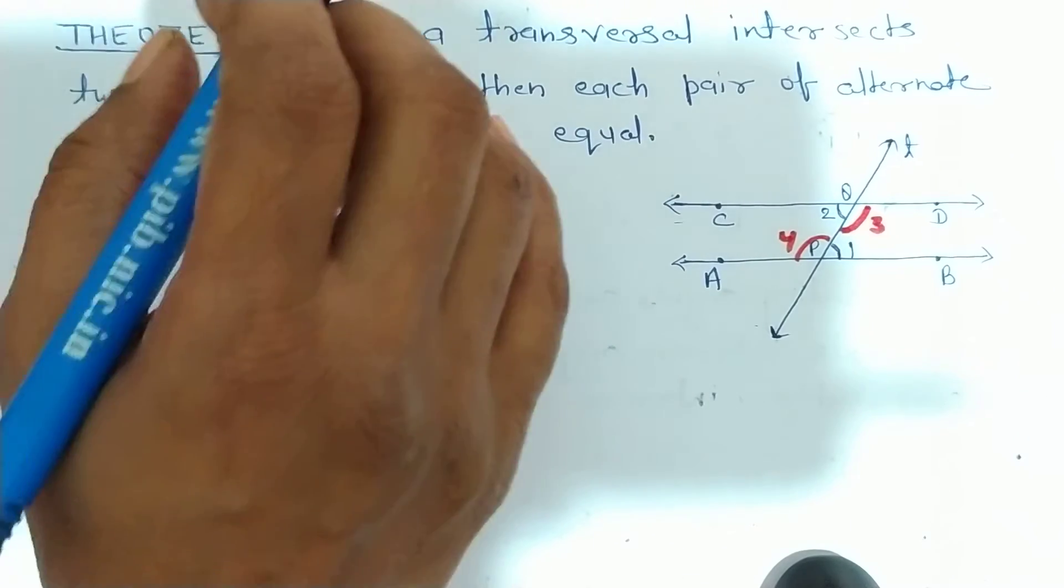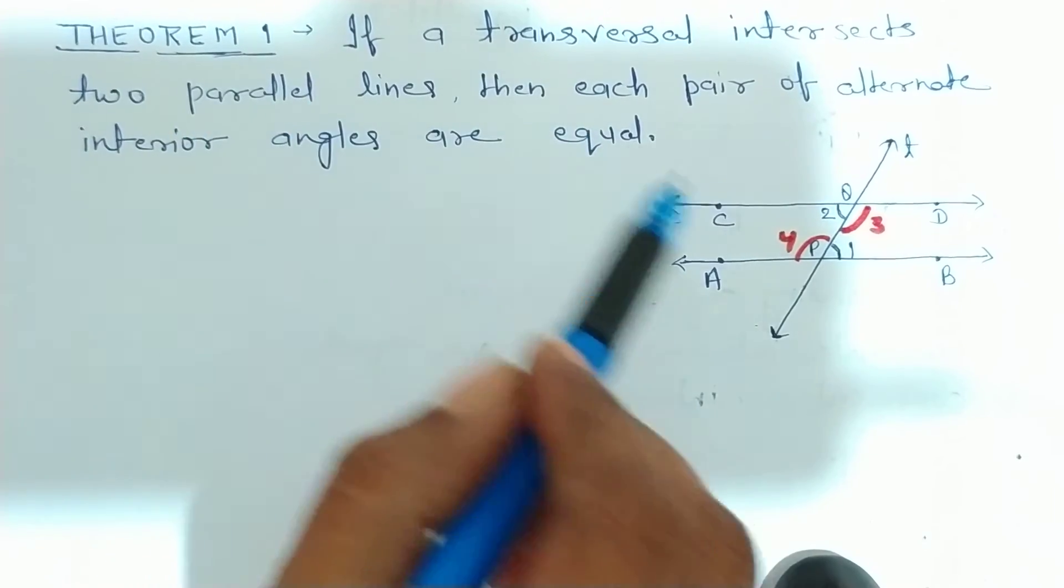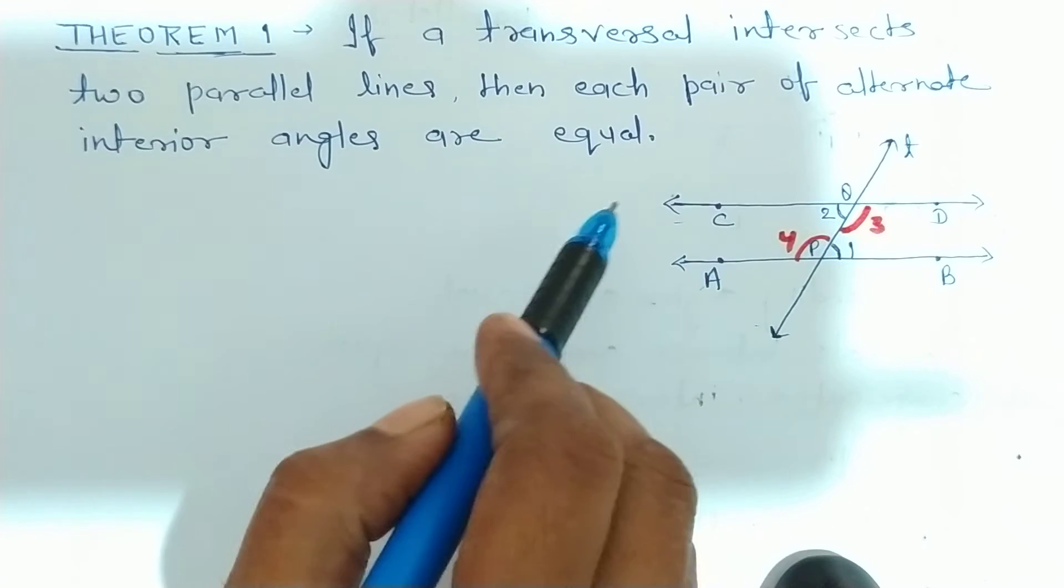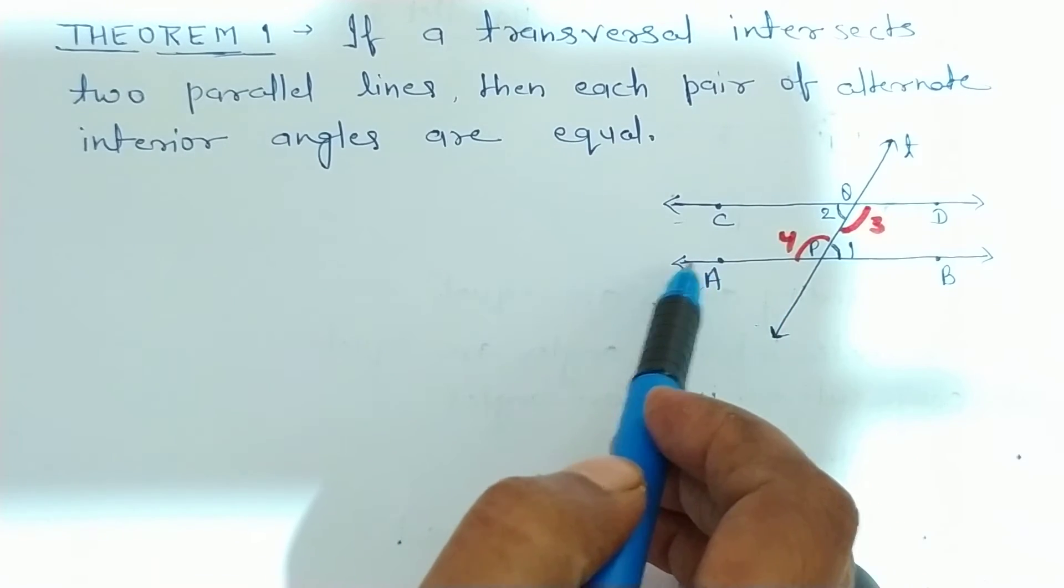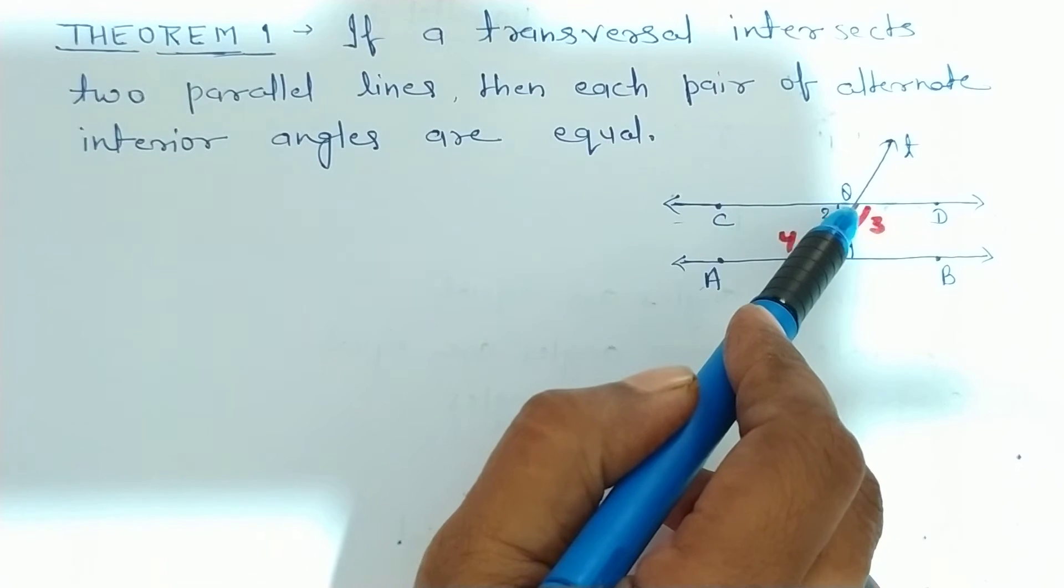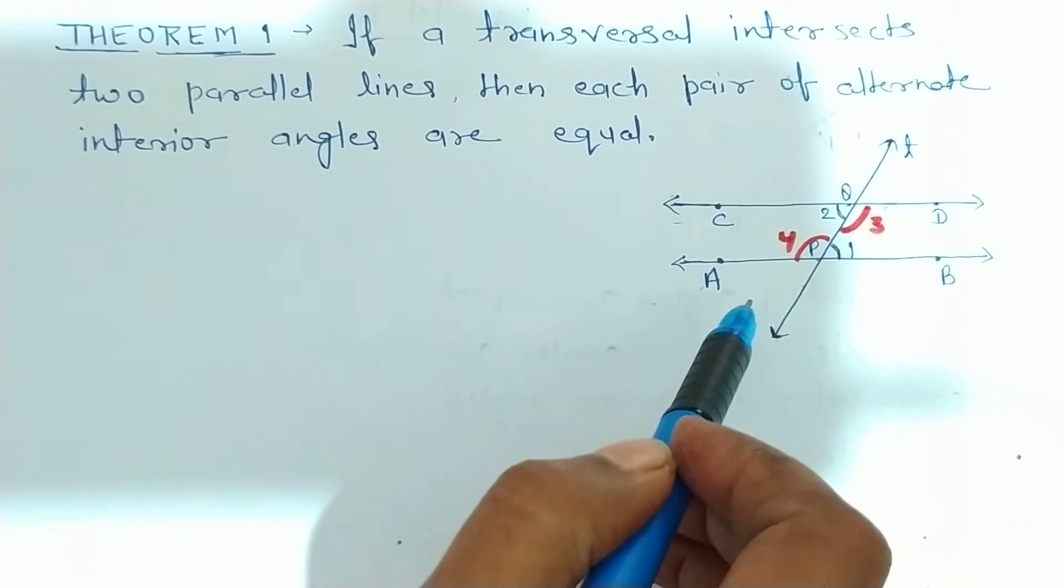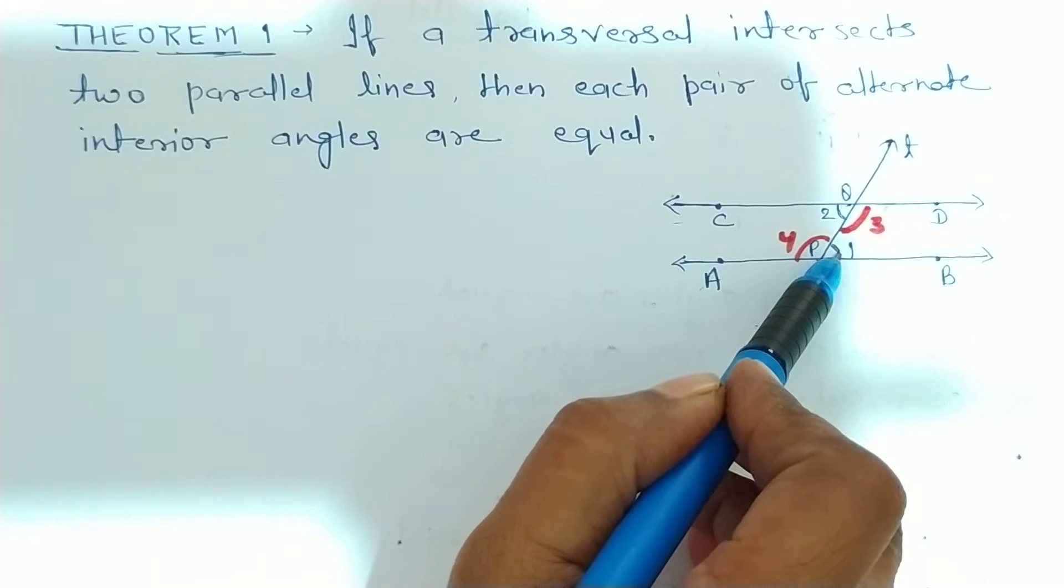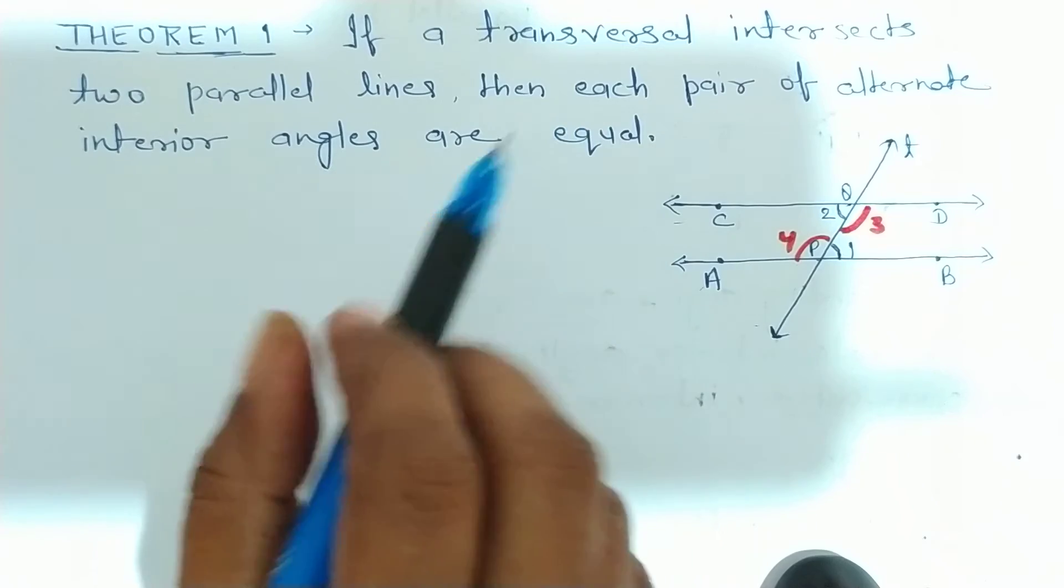Now, sabse pehle hum yeh dekhenge hum log, ki hamari paas kya kya given hai. To dekho, given that AB and CD are two parallel lines. Transversal T intersects AB at point P and CD at point Q. Making two pairs of alternate interior angles 1, 2 and 3, 4. Clear?